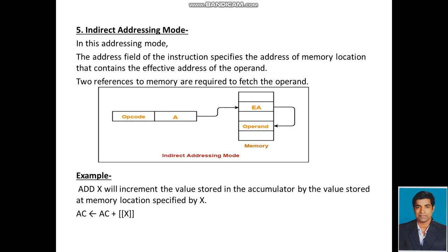Indirect Addressing Mode: In this addressing mode, the address field of the instruction specifies the address of a memory location that contains the effective address of the operand. Two references to memory are required to fetch the operand. The memory content or data is fetched indirectly from memory — first we refer to a memory address, from which we get the address for the main content, and so we are accessing the operand indirectly.